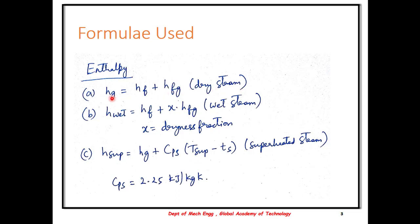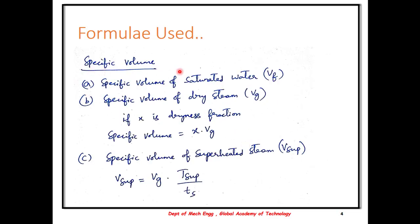The numericals involve calculation of total enthalpy for different cases of steam: dry steam, wet steam, and superheated steam. We are also required to calculate the specific volume — VF of saturated water, specific volume of dry steam denoted as VG, calculated as X into VG where X is the dryness fraction. In case of specific volume of superheated steam, the formula is V superheated equals VG into T superheated divided by TS. Remember, the temperatures here must be in Kelvin.